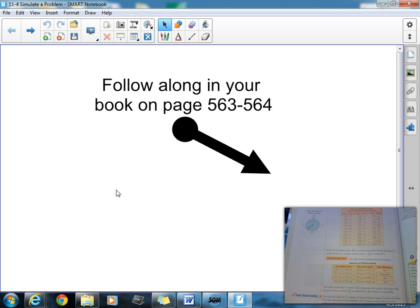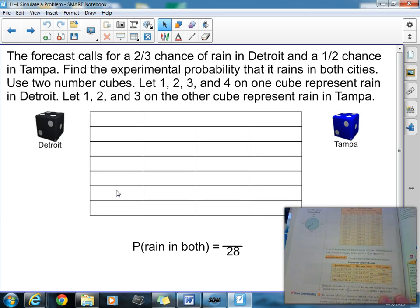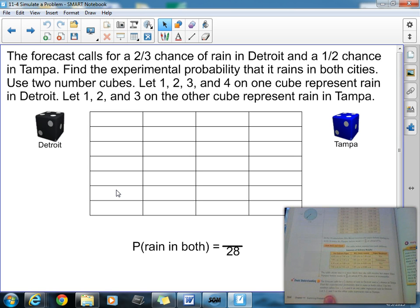So let's go ahead and do one other one. Now, the one in the book, they use spinners. Most of you, and I don't even, have spinners. So what we're going to be doing is a little bit different one. Now, this is the check understanding on page 564. This is the bottom here, page 564.